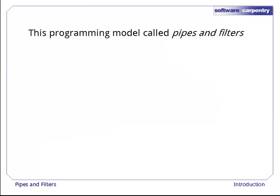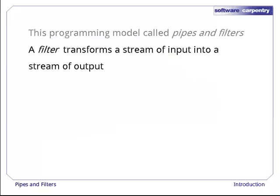This programming model is called pipes and filters. A filter is a program that transforms a stream of input into a stream of output. Almost all of the standard Unix tools can work this way. Unless told to do otherwise, they read from stdin, do something to what they've read, and write to stdout.